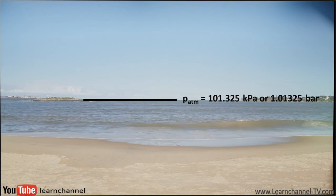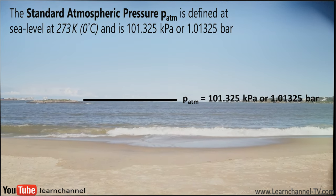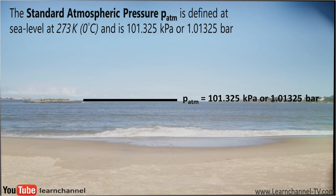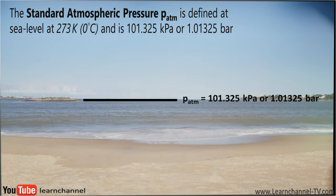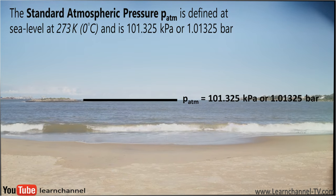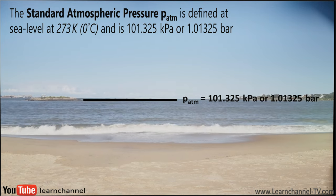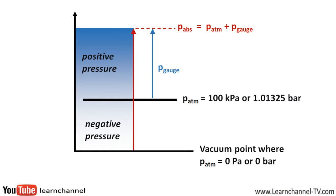Atmospheric pressure is the ambient pressure of the surrounding air. The problem is that atmospheric pressure varies with temperature and altitude. So we define the standard atmospheric pressure as the average pressure at sea level at the temperature of 273 Kelvin, or zero degrees Celsius.